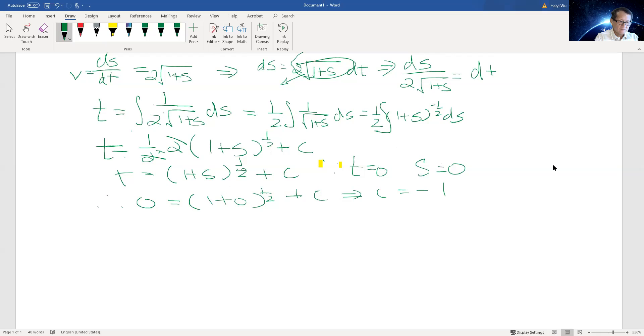We have found the relationship between time and s, which can be written as t = √(1 + s) - 1. Now we change to s in relation to t. We get s = (t + 1)² - 1. Now we've established the relationship between s and t.